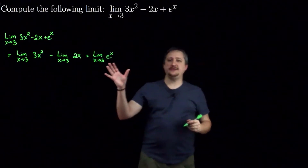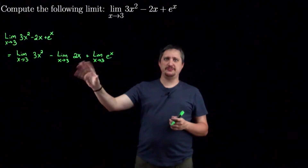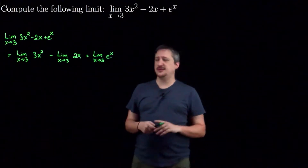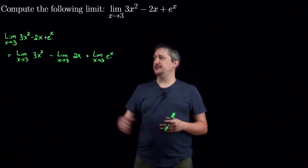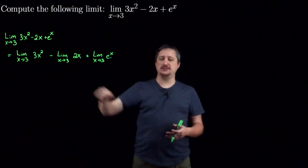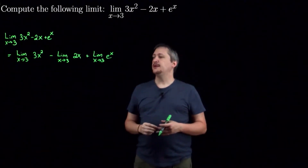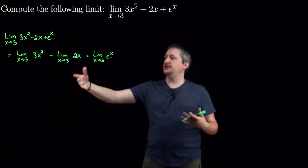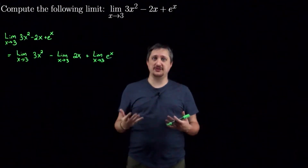Now strictly speaking I can only do this if these limits exist. It would be a good idea to make sure. There are times where that's actually really important and we'll see that later when we talk about indeterminate forms. Generally speaking, if you're working with nice continuous functions — which these all are — each individual limit will definitely exist at these given points. We've split this across the plus and minus, but with our algebra laws we can also split across multiplication and exponentiation, again as long as the limit exists.